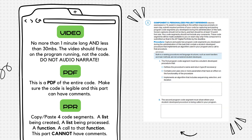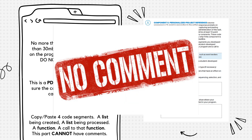The next two code segments deal with a function. Remember, this function needs a parameter, needs to go through the list referenced above, and needs an if-else statement. Finally, you need to paste where in your code that function is being called. A real important note: these code segments should not contain any comments. Any comments, and you'll likely not get scored for these four points.